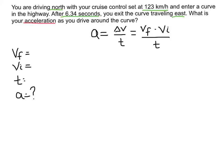I know the initial velocity 123 kilometers per hour in a direction of north so I'm going to list that. I also know the final velocity is going to be 123 kilometers per hour because cruise control is set and this time we're going to have a direction in the east and finally I know the time is 6.34 seconds.